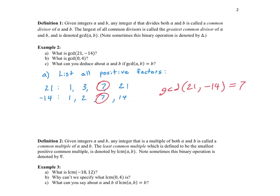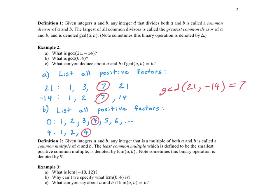What about GCD(0, 4)? For 0: 1×0=0, 2×0=0, 3×0=0 — all positive integers are factors of 0. For 4: we have 1, 2, and 4. The greatest number in common is 4, so GCD(0, 4) = 4.